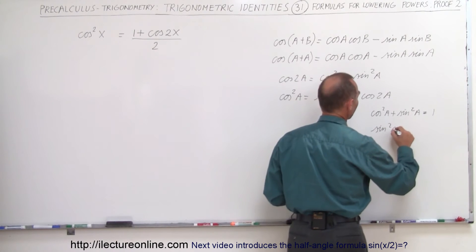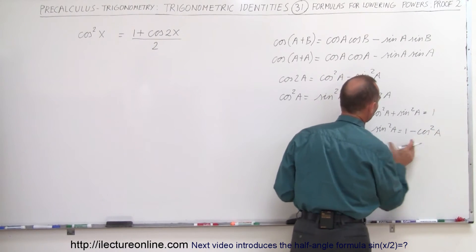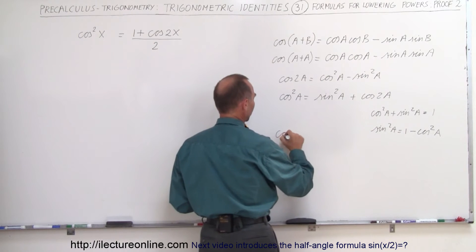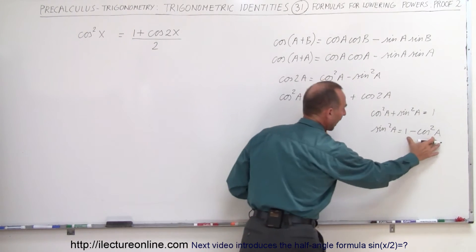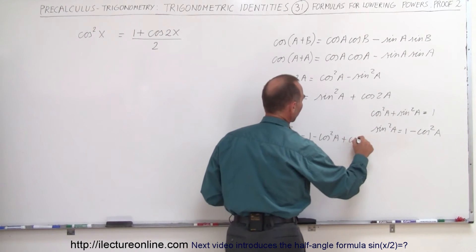So the sine squared of a is equal to 1 minus the cosine squared of a and then we substitute the sine squared of a by what it is equal to right here. So now we can write that the cosine squared of a is equal to 1 minus the cosine squared of a plus the cosine of 2a.